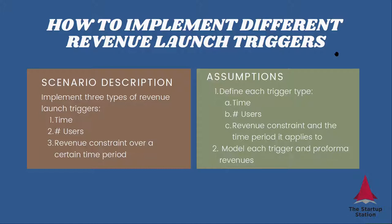What we'll do in the example is define each constraint, then model each trigger and calculate the revenues that will be based on that trigger — so we'll model how that happens.